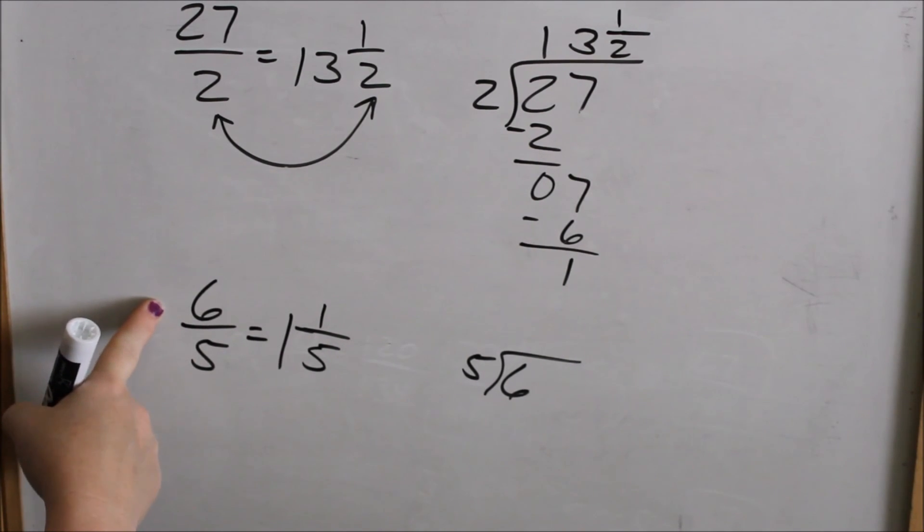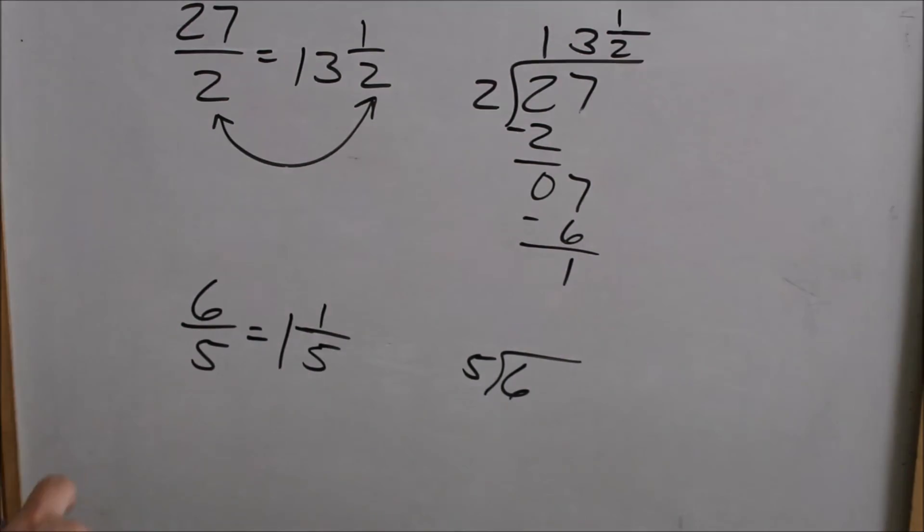An improper fraction is when your numerator is larger than your denominator. That's when it's considered improper. And then those can be changed into a mixed number.